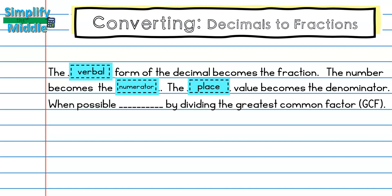The place value becomes the denominator. Hundredths would be my denominator. And then when possible, you'll need to simplify by dividing out the greatest common factor.